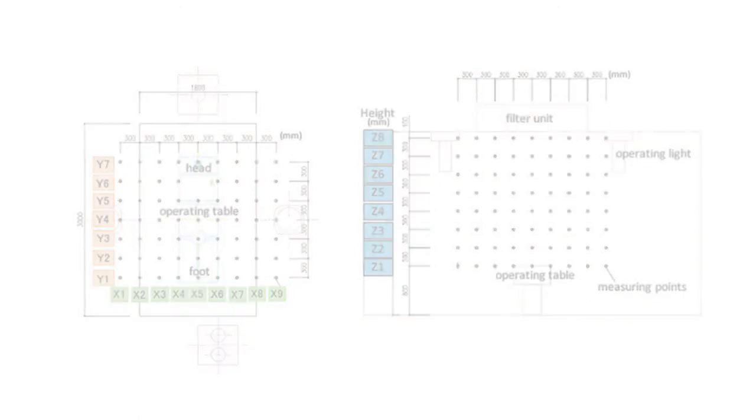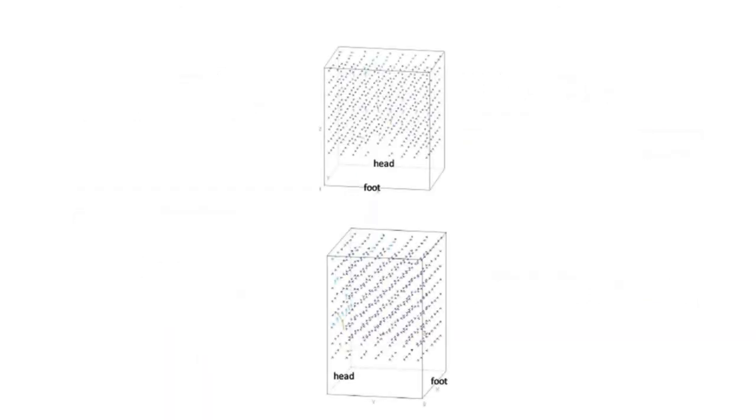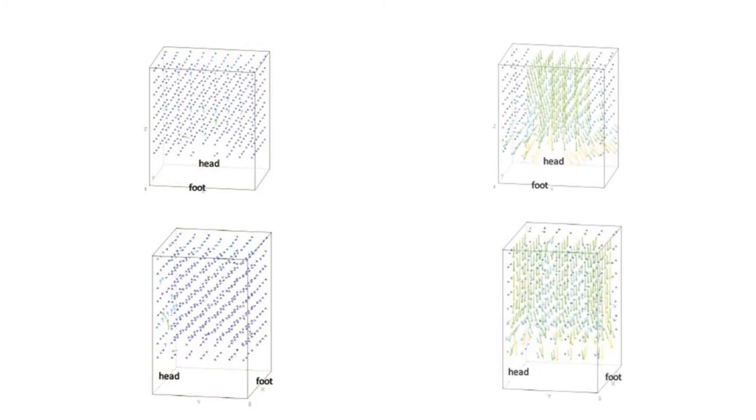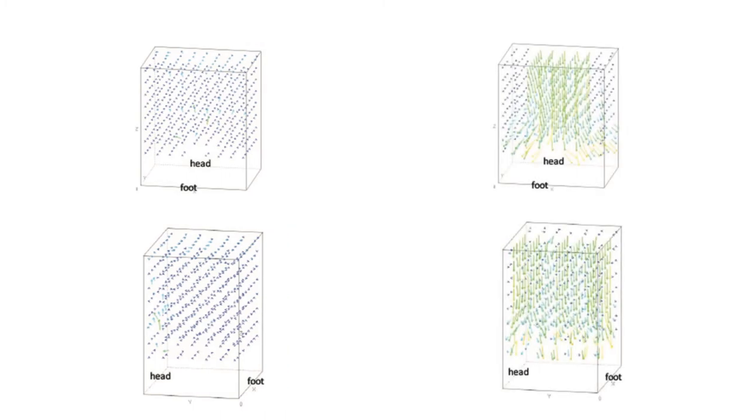The results showed that the forced air warming system created convective airflow, causing air to recirculate around the mannequin instead of simply passing over it. But restoring laminar flow counteracted this effect.